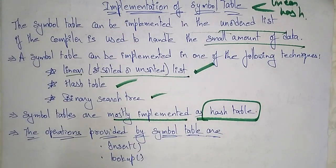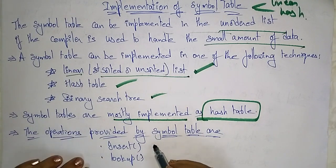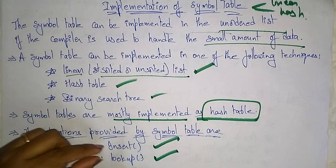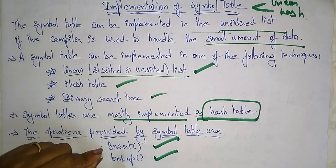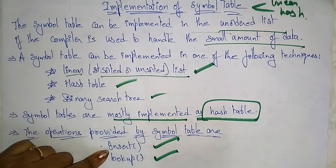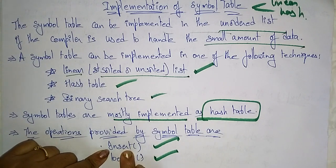Now let's see what operations are provided by the symbol table. The symbol table will mainly perform two operations: one is insert and another is lookup.